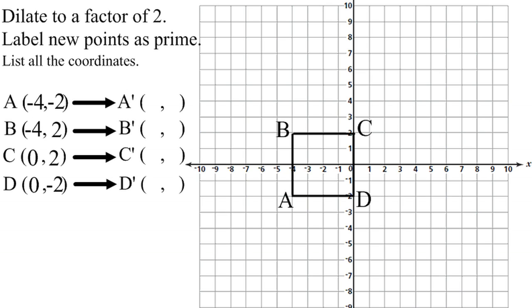So negative 4 times 2 is negative 8. Negative 2 times 2 is negative 4. Negative 4 times 2 is negative 8, and 2 times 2 is 4.